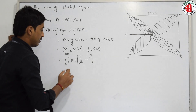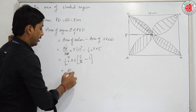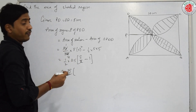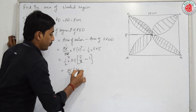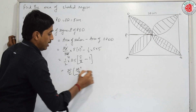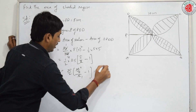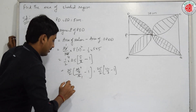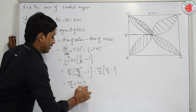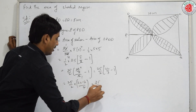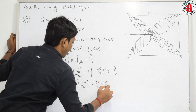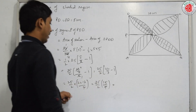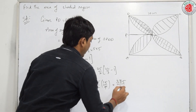We can write pi as 22 by 7. That gives 25 by 2 into 22 by 7 minus 1. Taking LCM, that is 25 by 2 into 22 minus 7 over 7. That is 25 by 2 into 15 by 7. Simplifying, 25 into 15 is 375 by 14.